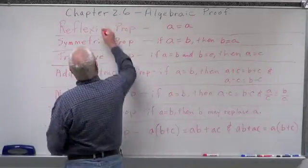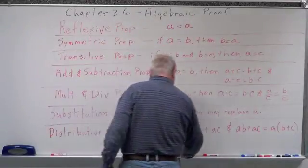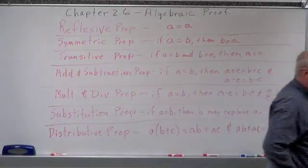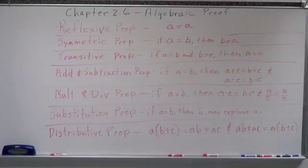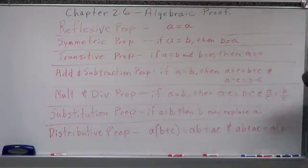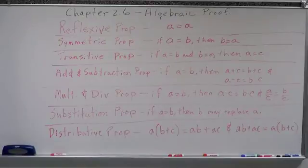In order to do that, we need to review some things out of algebra — some properties, universal properties called postulates. They're very basic things and rules that we use in order to do algebra, and we're going to transfer those over into the geometric area: angles and segments.